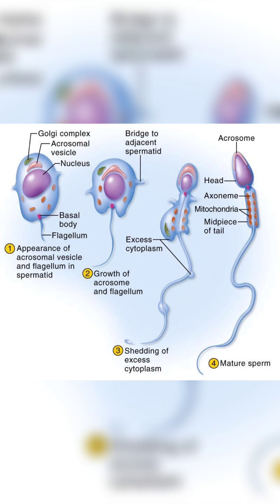In summary, spermatogenesis refers to the process of producing sperm cells, while spermiogenesis refers to the final stage of maturation of sperm cells, resulting in the formation of fully functional spermatozoa.